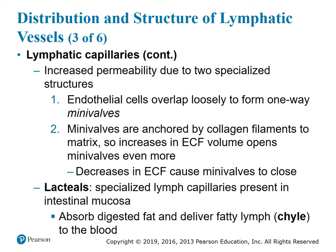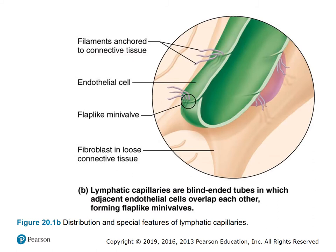Lacteals are specialized lymph capillaries present in the intestinal mucosa. Their job is to absorb digestive fat and deliver fatty lymph, called chyle, to the blood. Figure 20.1b shows the distribution and special features of lymphatic capillaries — blind-ended tubes in which adjacent endothelial cells overlap each other forming flap-like mini valves.